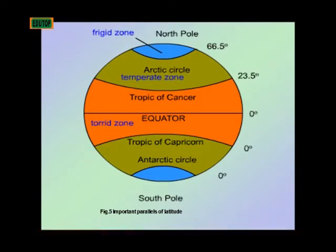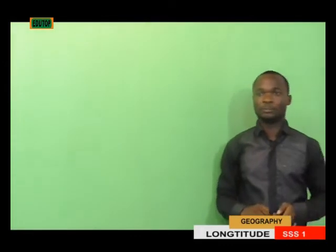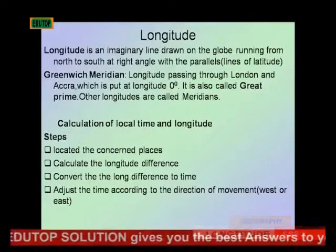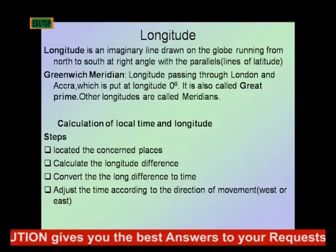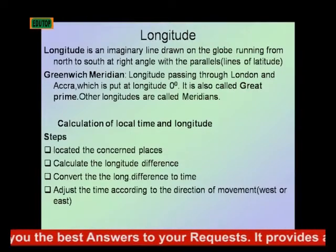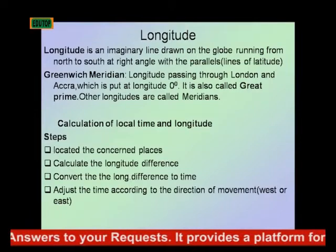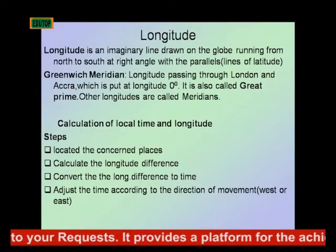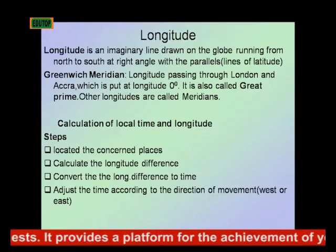The Tropic of Capricorn is below the equator. Now let's talk about longitude. Longitude is an imaginary line drawn on the globe which runs from north to south, at right angles with the parallels, which are the lines of latitude.